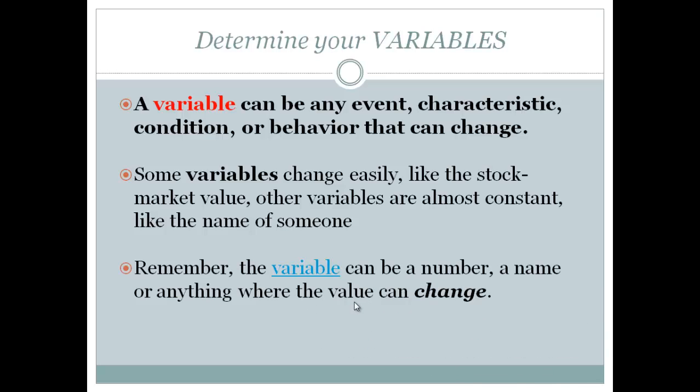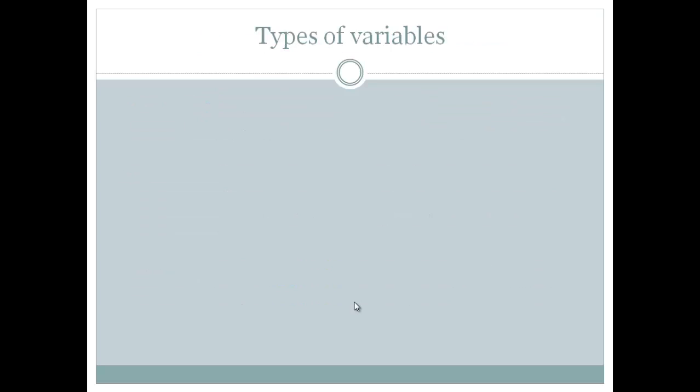And remember, the variable can be a number, a name, or anything whose value can change. Now there are a couple major types of variables that we're going to be looking at, and those two are the independent variable. Very important, these are two terms that are often misconstrued and screwed up when people are writing FRQs. So you really want to be able to nail the differences between these two and be able to explain them and be able to apply them in an experiment.